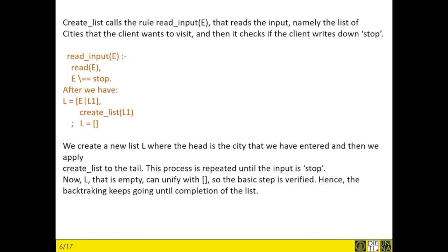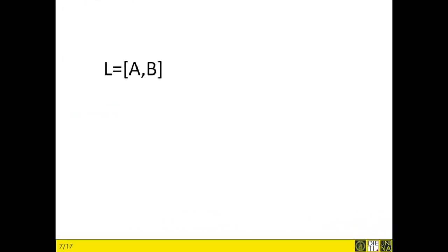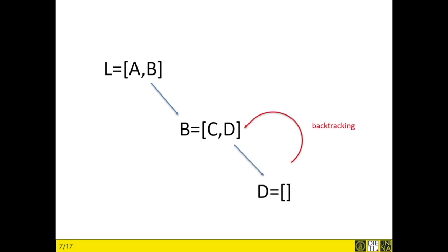This recursive creation of the list leads to the inference method of backtracking. We create a list where the head is the city already entered, and we apply 'createList' to the tail, which is a sub-list. This continues until the client enters 'stop'. At that point, the list is unified with the empty list and the backtracking starts. All the elements find their unification, as we can see in the following scheme — first we go down the branch of the tree, then we go up with the backtracking.